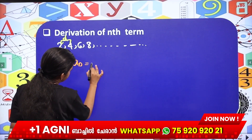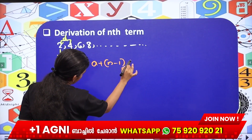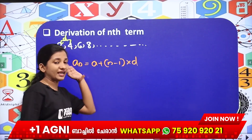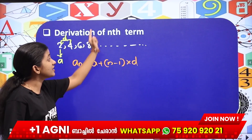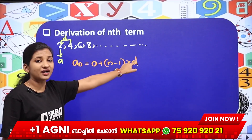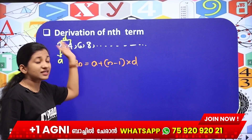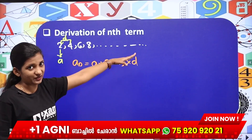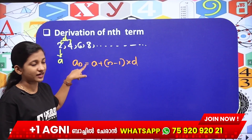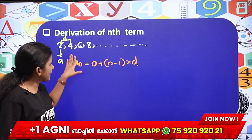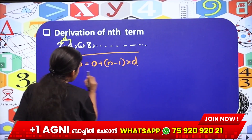An equal to a plus n minus 1 into d. Here 'a' is the first term and 'd' is the common difference. We have to find the nth term. The term number is n. Then an equal to a plus n minus 1 into d. We have to find this equation.